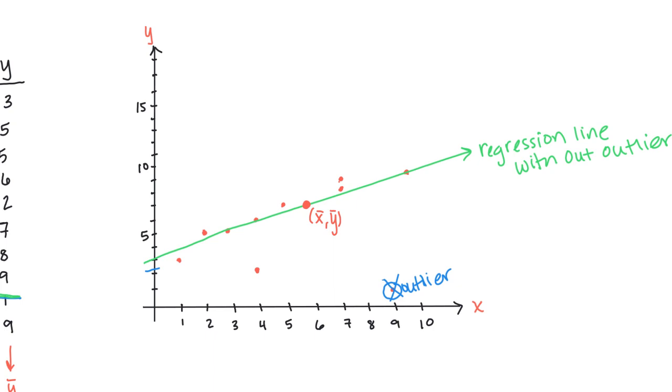One thing we can measure with the data points in the regression line is how far away each data point is from the regression line. For example, this data point right here is below the regression line. Whereas this data point up here is above the regression line.